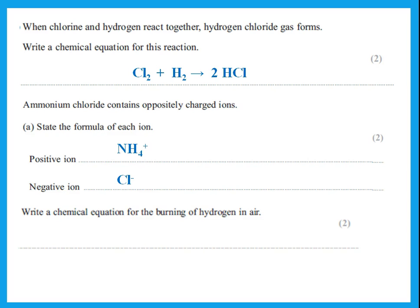Write a chemical equation for the burning of hydrogen in air. Burning hydrogen in air means reacting it with oxygen — hydrogen burns in air to give water. Put 2 before the water: before the arrow I have 2 oxygens, so I need 2 before the water to have 2 oxygens. That makes 4 hydrogens, so put 2 before the hydrogen before the arrow to make 4 hydrogens. This is your balanced equation.